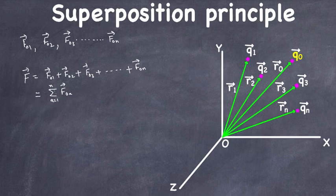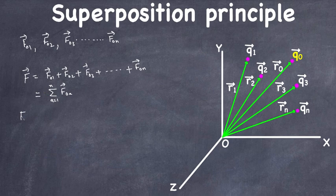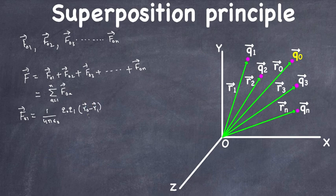From the previous video, the force between two charges in terms of their position vectors — say charge Q1 and Q naught with position vectors R1 and R naught — is: F01 equals 1 over 4 pi epsilon naught, times Q0 times Q1, times the vector (R0 minus R1) divided by the magnitude of (R0 minus R1) cubed.